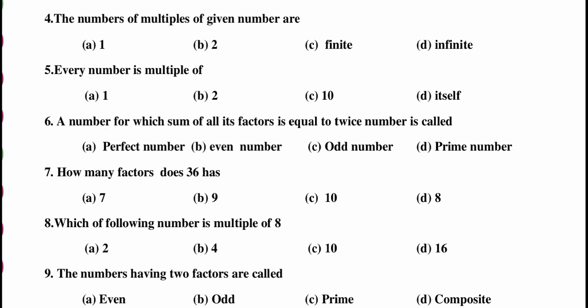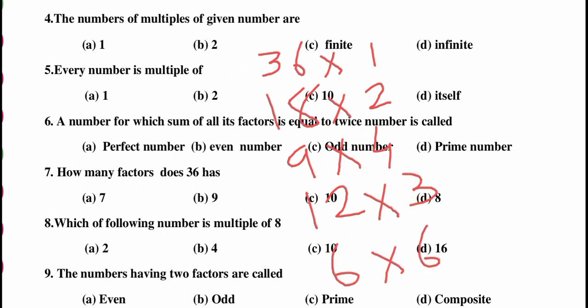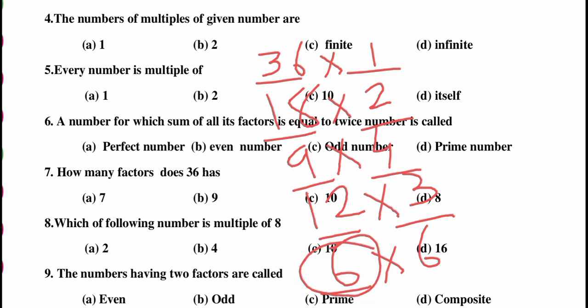Question number 7: how many factors does 36 have? The factors of 36 are: 1, 2, 3, 4, 6, 9, 12, 18, 36. Counting them: 1, 2, 3, 4, 5, 6, 7, 8, 9 — and 6 is counted only once. So there are 9 factors of 36.